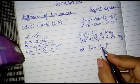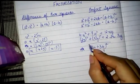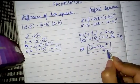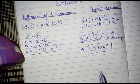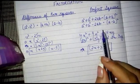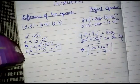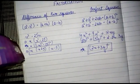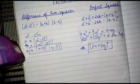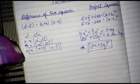So this equation can be written as (2x + 3y)². This is how we factorize the equation if the expression is in the form of a perfect square. Thank you so much, bye bye for now.